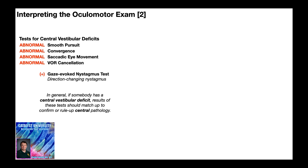Now remember that depending on the nature of the nystagmus, it can indicate either peripheral or central deficits. When you have direction-fixed nystagmus, that indicates a peripheral pathology. But when you have direction-changing nystagmus, that's indicative of a central vestibular deficit. If somebody has a central vestibular deficit — following a traumatic brain injury, or maybe multiple sclerosis — these tests should all match up to confirm and rule up that pathology.